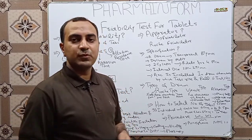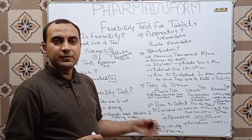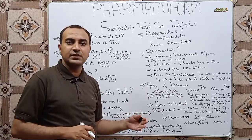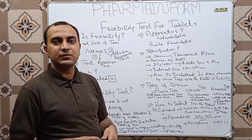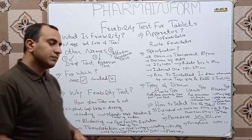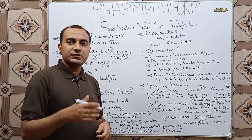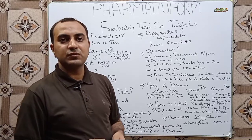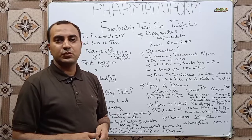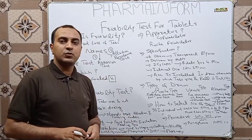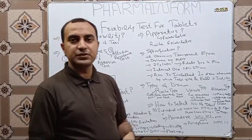First, we perform in-process testing during compression, and one of the most important tests is friability. If friability passes, we continue the compression operation. When compression is complete, the batch is ready for coating, and we have confidence to proceed because our friability is within the acceptance value. During blistering, core tablets face friction and rubbing forces from the feeders of blister machines, causing tablet edges to break down, so friability plays an important role in protecting tablets during blistering.